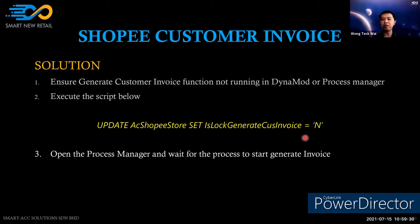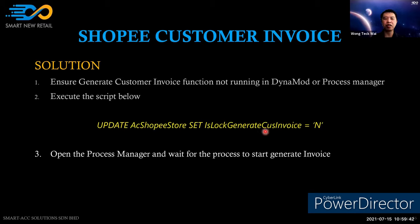The solution is to run this script: UPDATE the Shopee store table, SET the log field to end. Run this script only after confirming that the generate customer invoice function is not running in Dynamo or the process manager. Then reopen the process manager or Dynamo and wait for the process to generate the outstanding invoices.